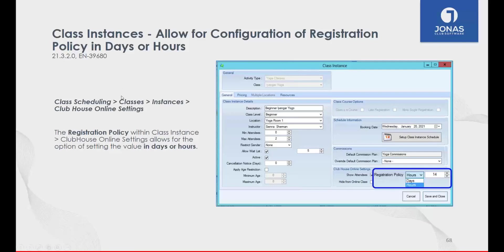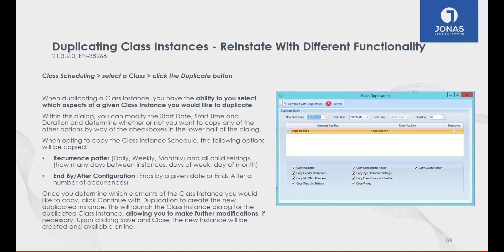A third change is a pretty big time saver — the ability to duplicate a class. This is especially useful if you're using class scheduling to manage pool or gym reservations where classes recur on the hour every day and you don't want to configure all parameters from scratch each time. We've reinstated the duplication ability, similar to our Event Management module. When duplicating, you can choose which parameters to copy, and afterward you can go in and modify anything else.